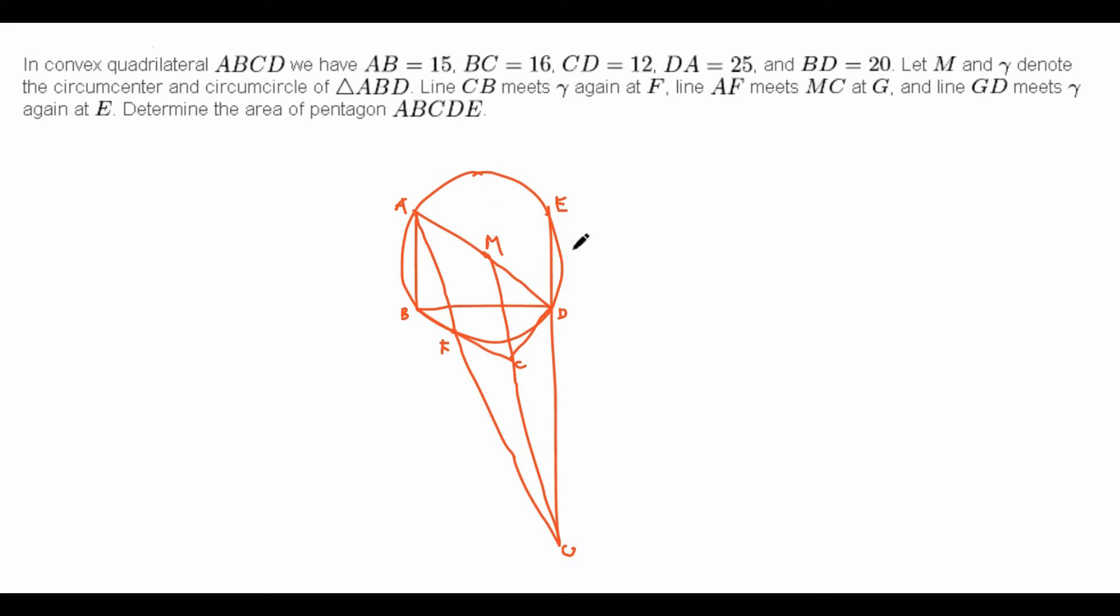Line CB meets gamma again at F, line AF meets MC at G, and line GD meets gamma again at E.